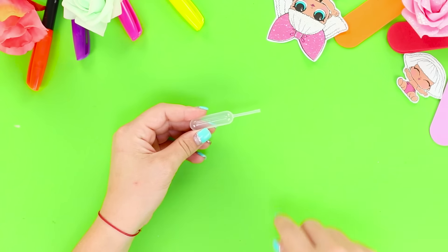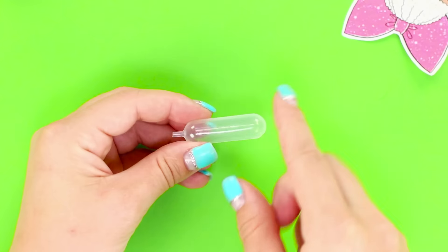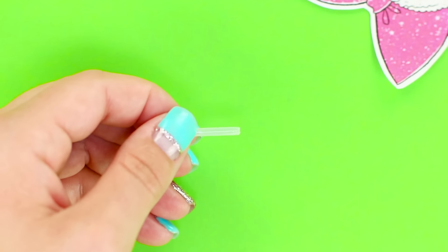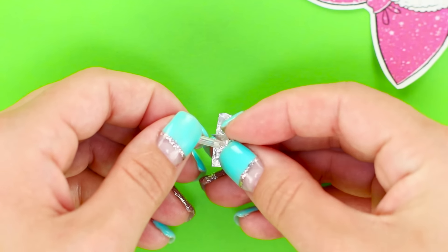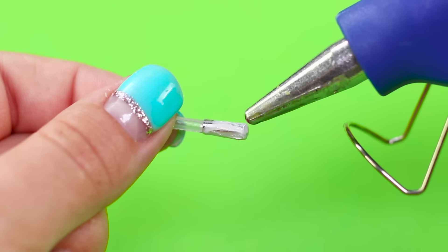For the first idea, take a plastic dropper. Cut off the edge and the bottom. Wrap one side of the tip with foil and cover it with a layer of colored hot glue.